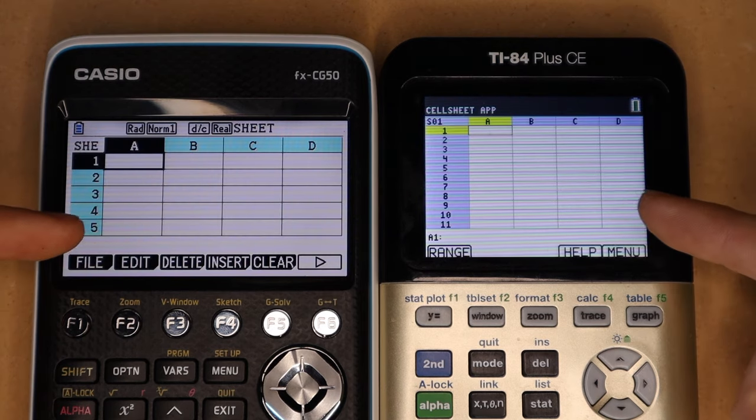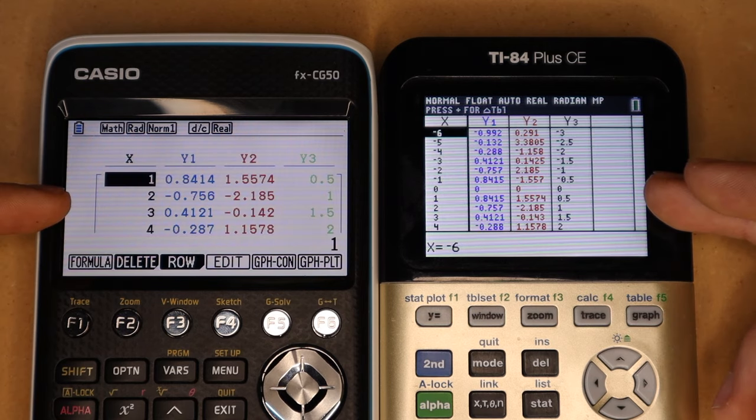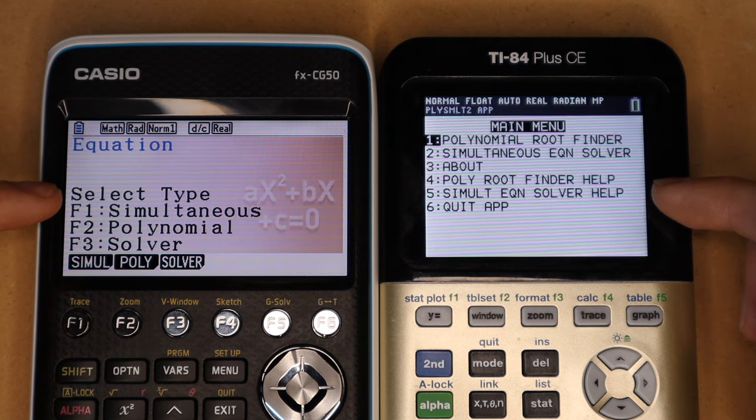The following things are basically the same on each calculator, and those things are the spreadsheet apps, the apps for graphing conic sections, the apps for a table of values of your functions rather than a graph, the equation solver app.